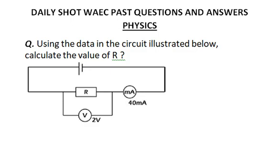Today we're going to be having a daily shot of physics and the topic is electricity. The question says using the data in the circuit illustrated below, calculate the value of R. R means resistance.